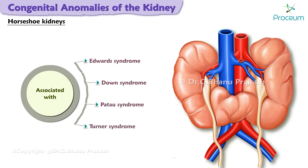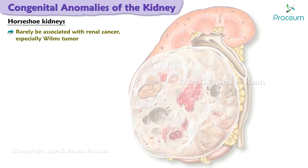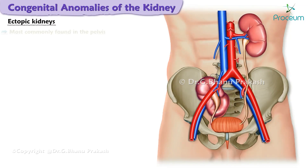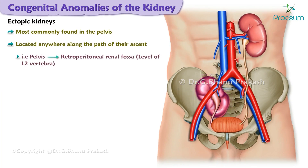Horseshoe kidney is associated with the following chromosomal aneuploidy syndromes: Edwards syndrome, Down syndrome, Patau syndrome, and Turner syndrome. Horseshoe kidney can rarely be associated with renal cancer, especially Wilms tumor. Ectopic kidneys are most commonly found in the pelvis.